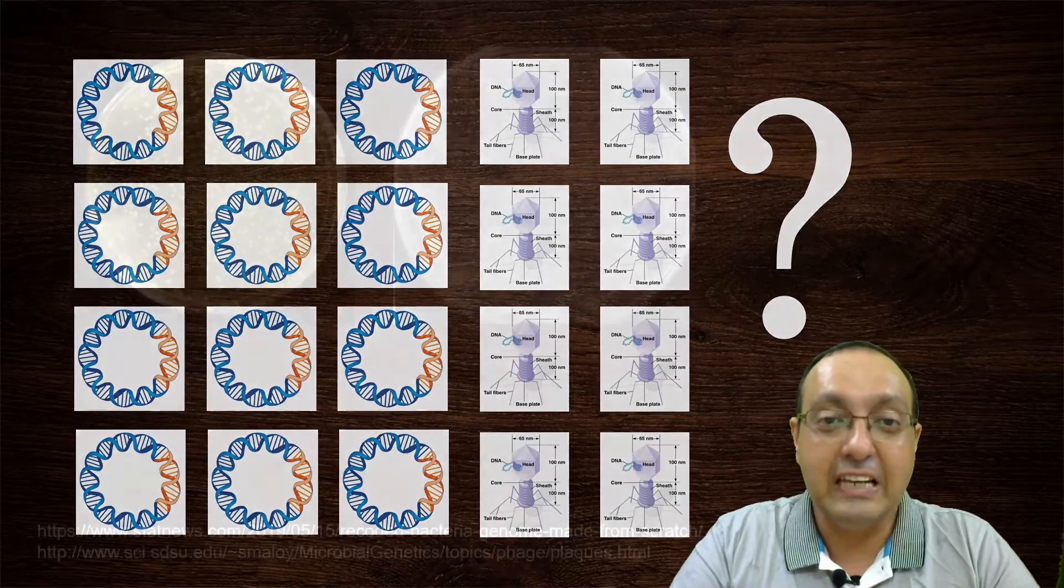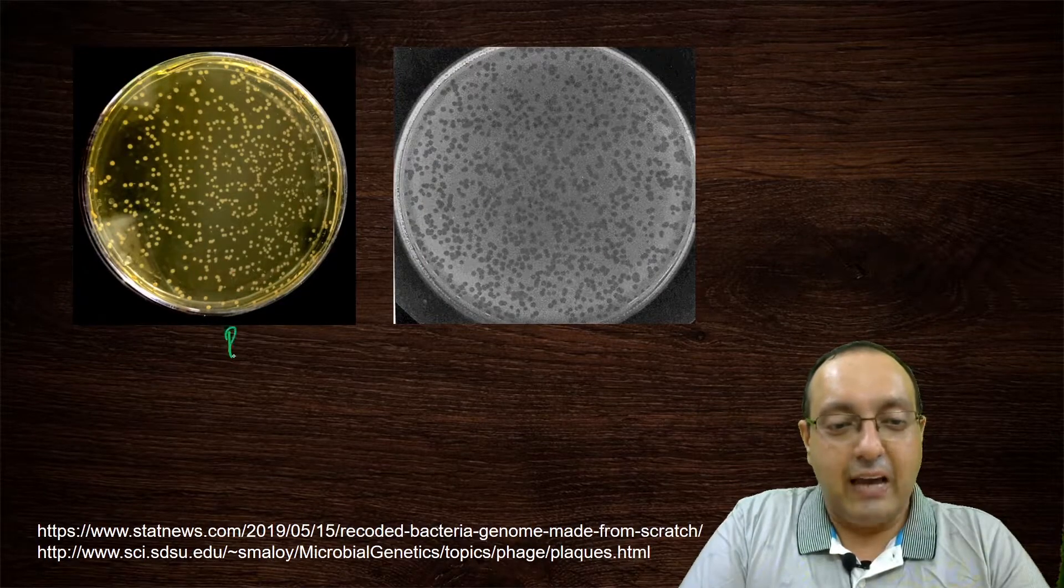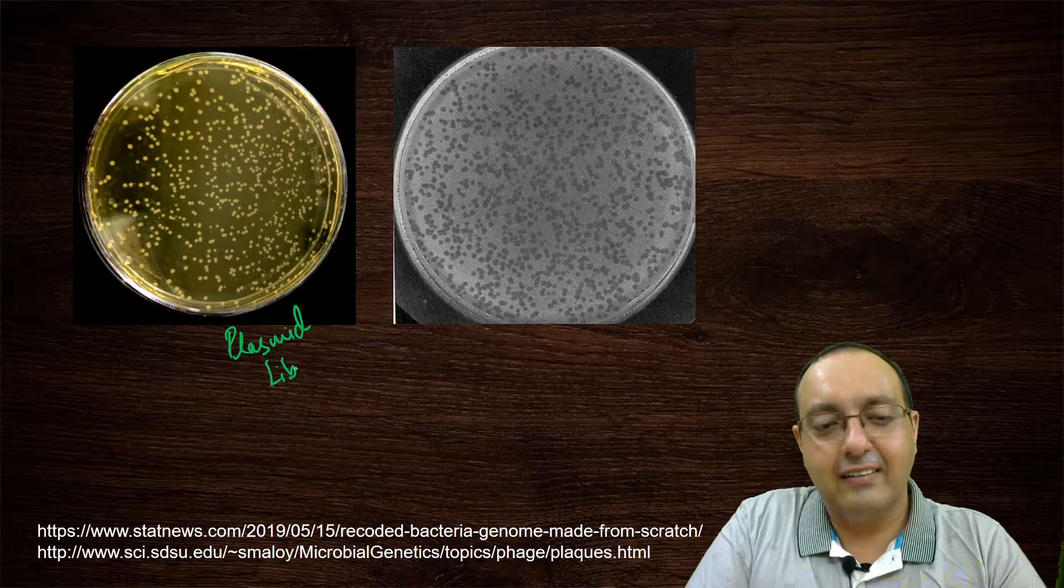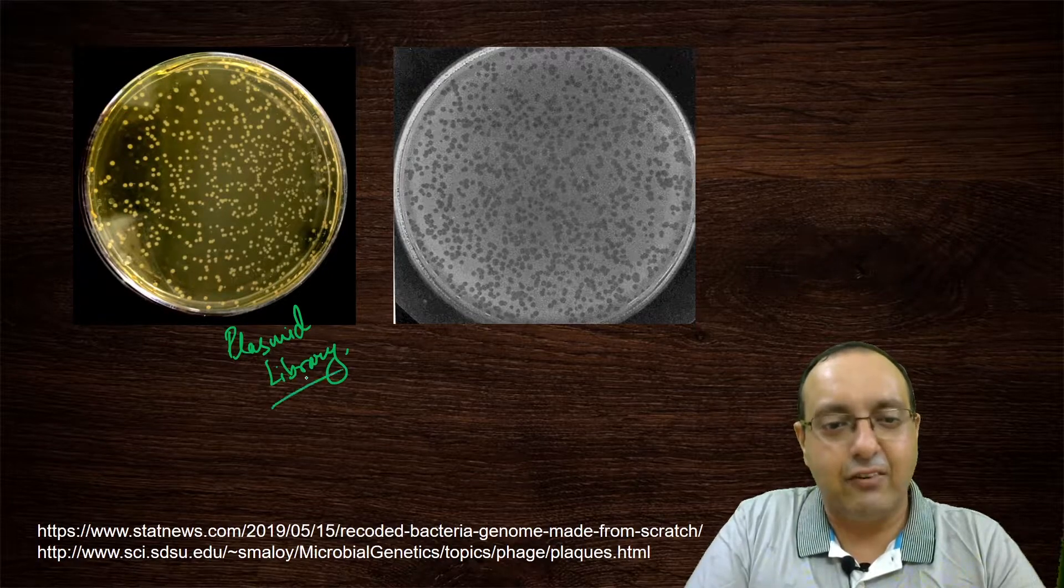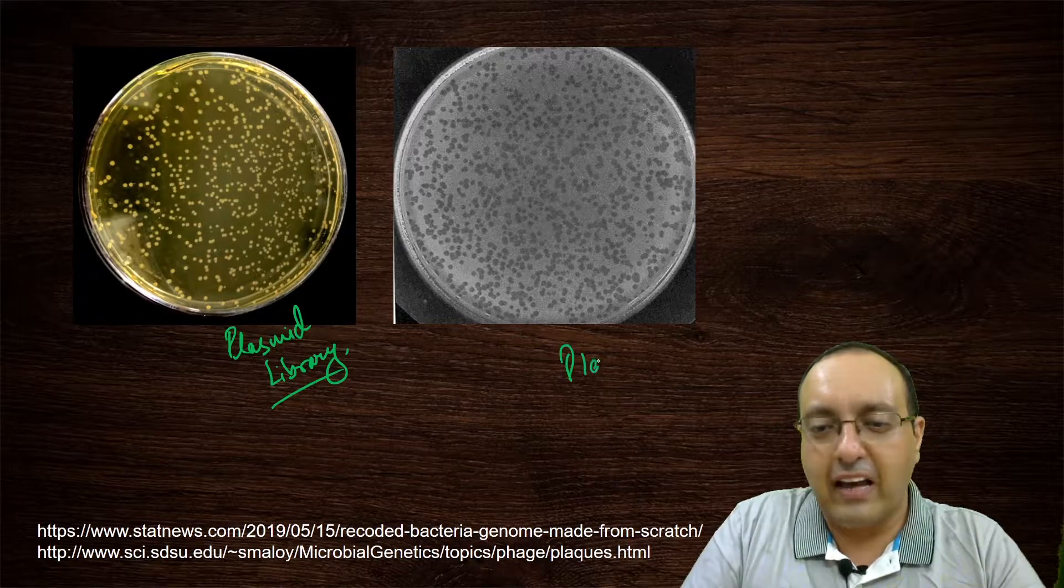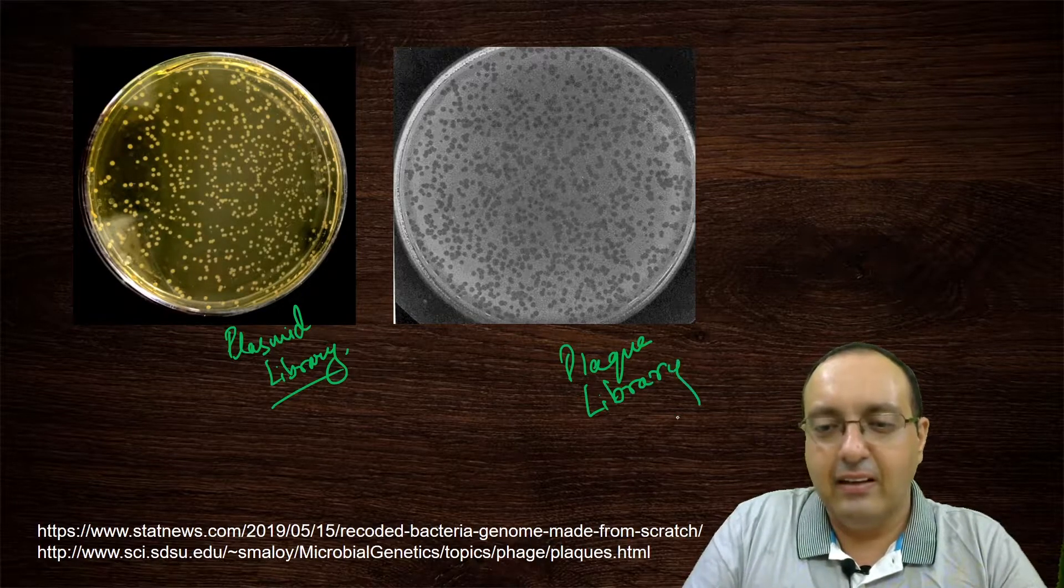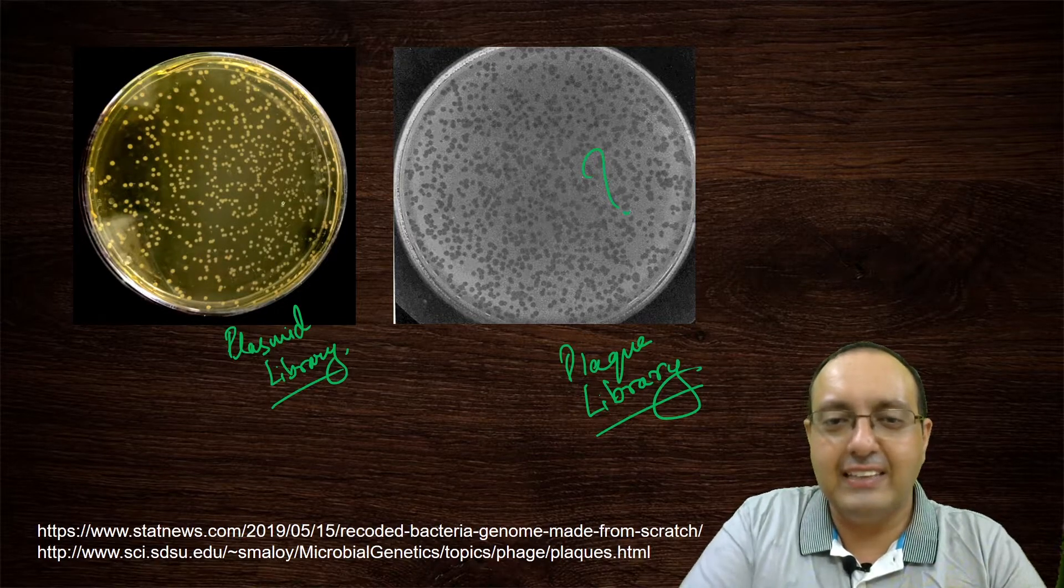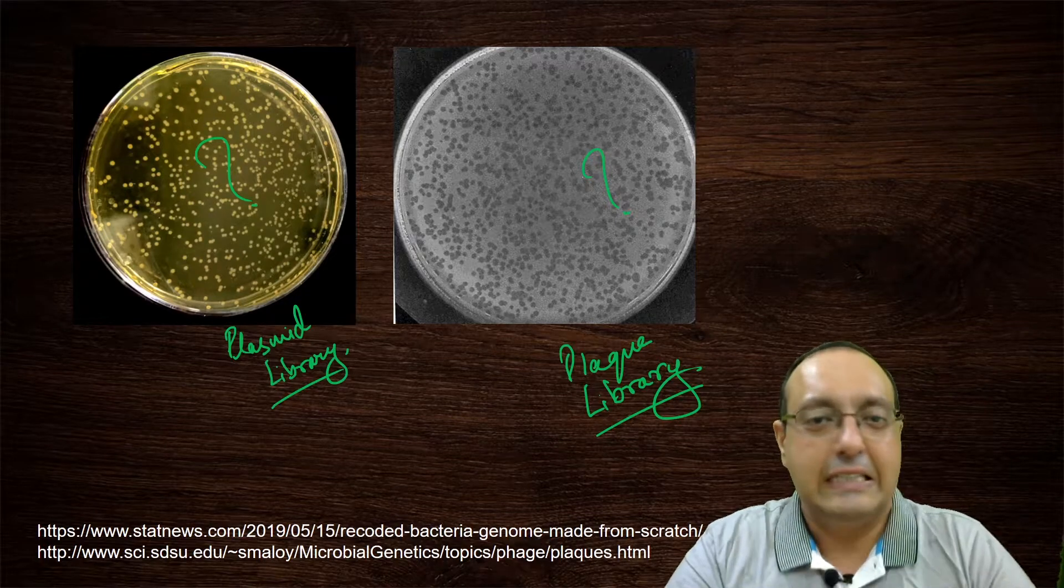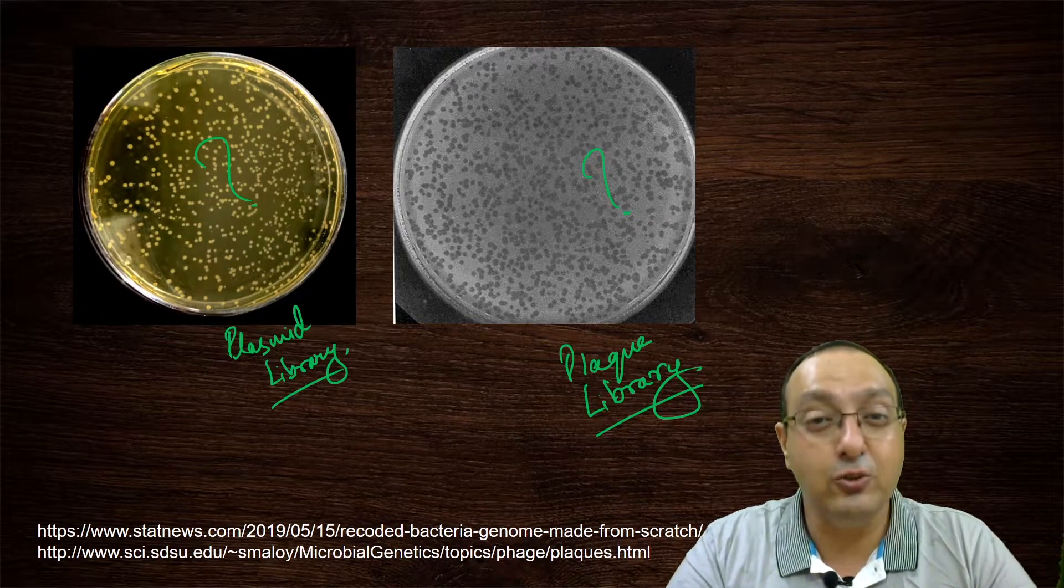So here is your plasmid library with several hundreds of different clones. And here is your plaque library. Which one contains your gene of interest? And which one of them are just not useful to you. So that's the problem here. And how many do you need to screen?